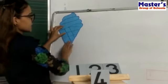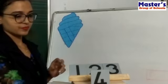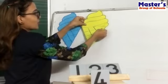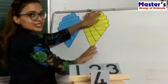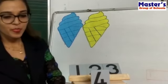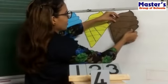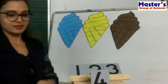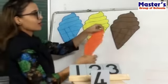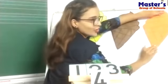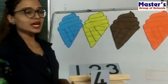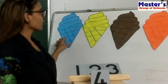One ice cream, two ice creams, three ice creams, and four ice creams. How many ice creams are there? Come on, let's count.